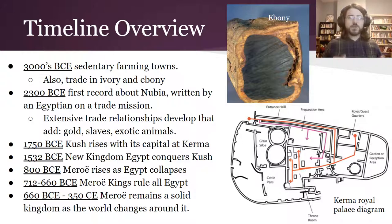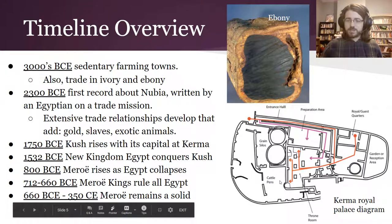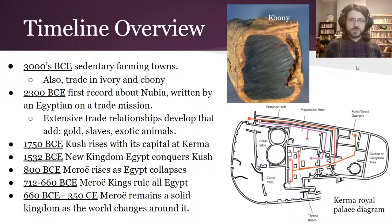Around 2300 BC is the first recorded mention of Nubia, written by Egyptians, and those inscriptions often talk about trade missions, incursions, or fighting off Nubians — it was a contentious relationship at different times. During that period, we also see the addition of gold, slaves, and exotic animals to the trade routes. In 1750, Kush rises — one of the major kingdoms — with its capital at Kerma. In the royal palace at Kerma, there were cattle pens and grain silos, showing the importance of controlling food resources for those rulers.